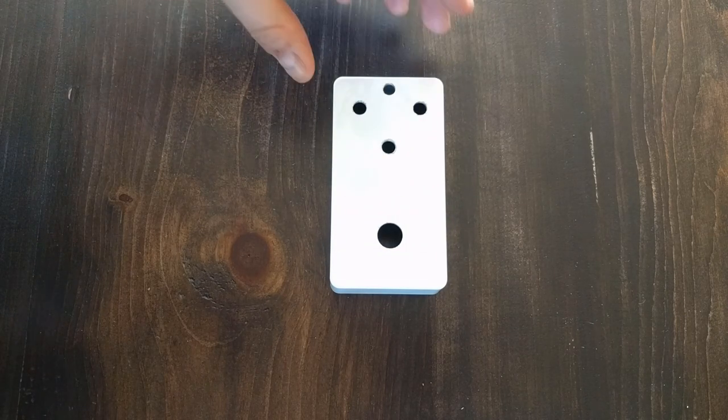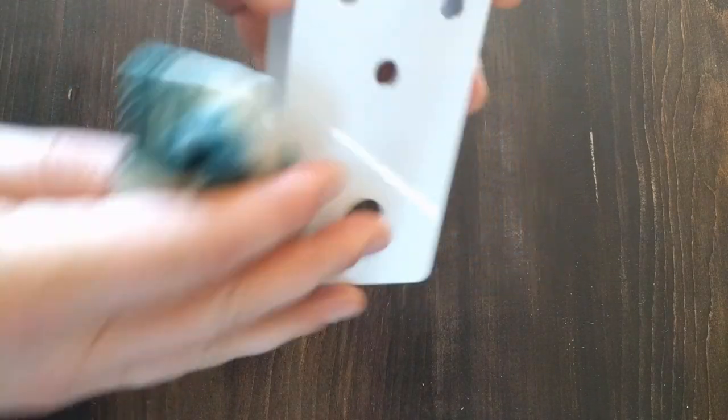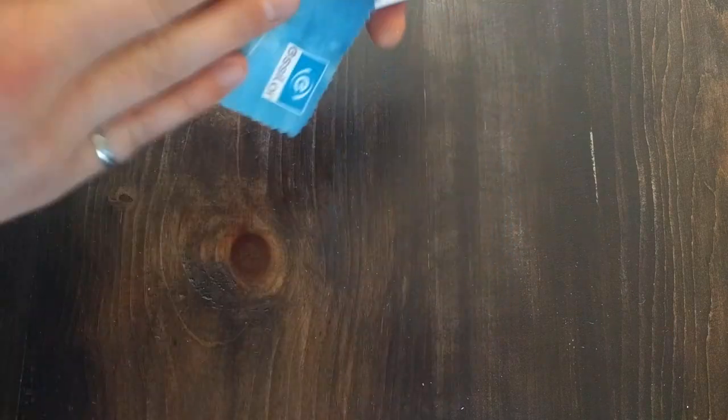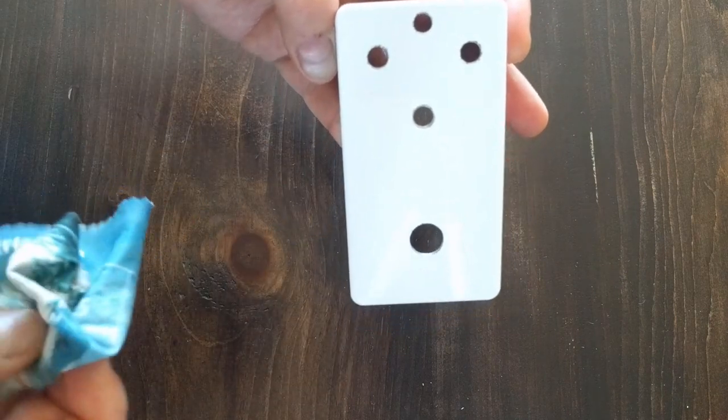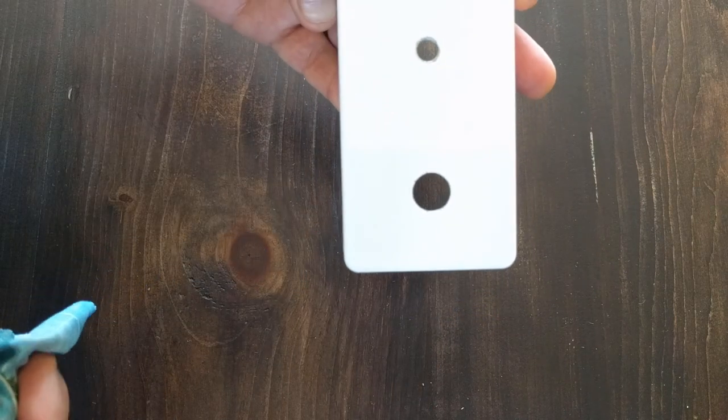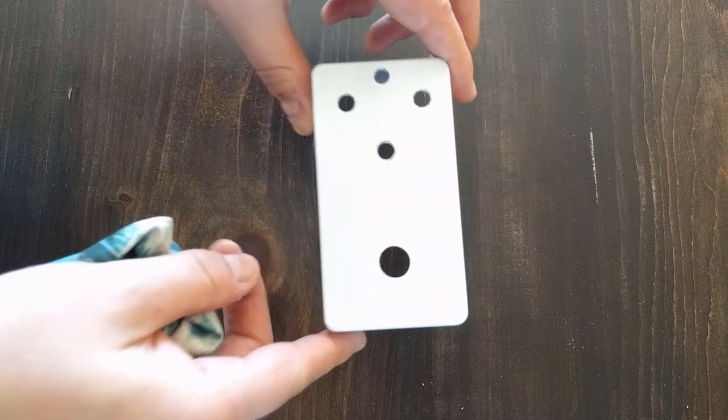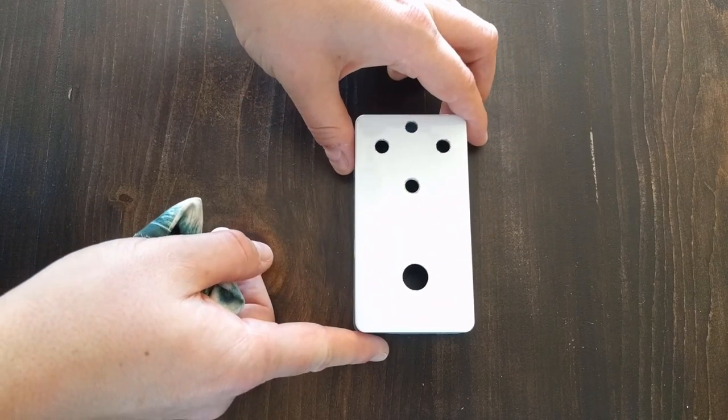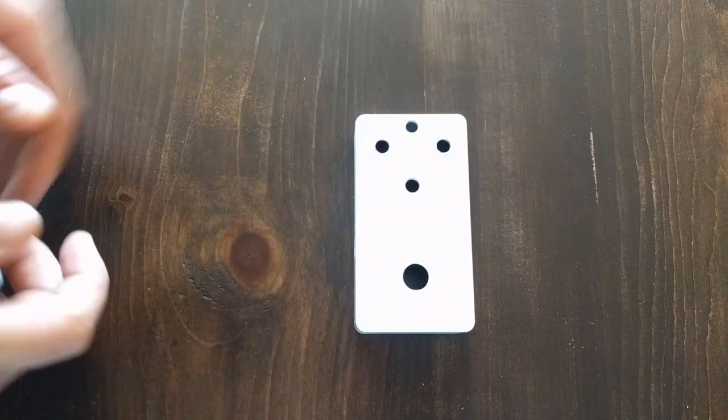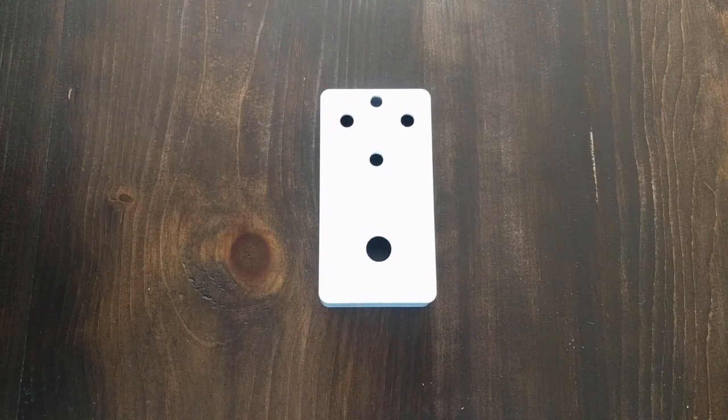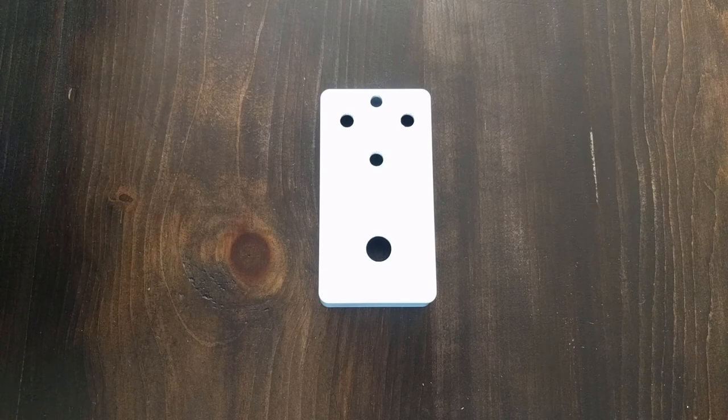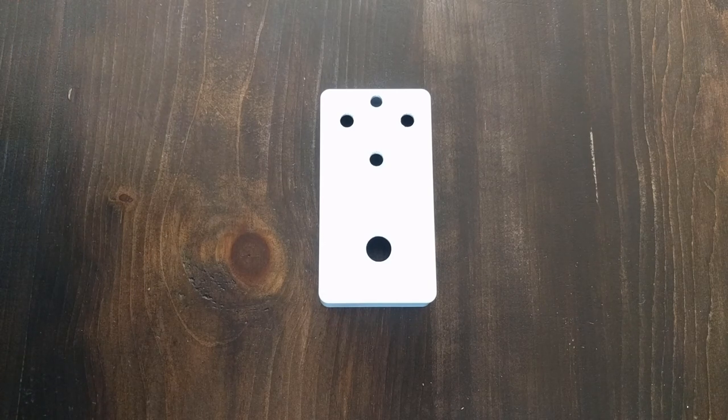So the first thing we want to do is just clean off the enclosure, make sure there's no dust on it. I use these cloths that I use to clean my glasses. I find they don't leave as much dust residue. I've already kind of been over this a few times, so I think we're probably good to go. But if you see anything on there, little burrs of metal or anything from the drilling, definitely want to get those off before you start trying to put on your decal.